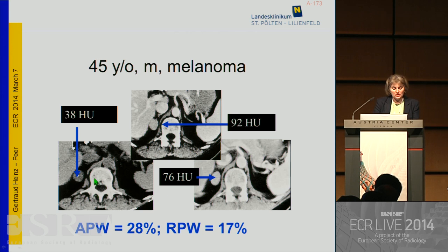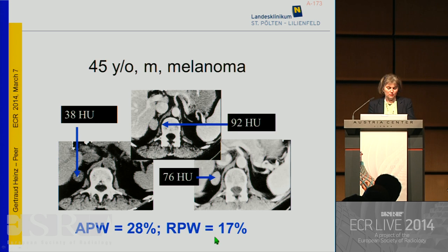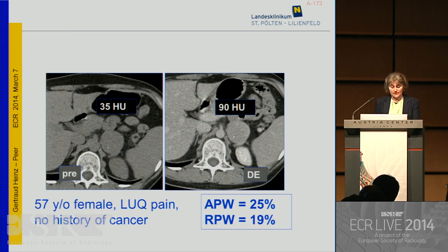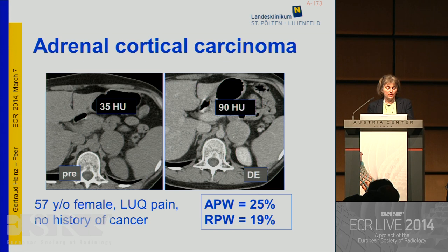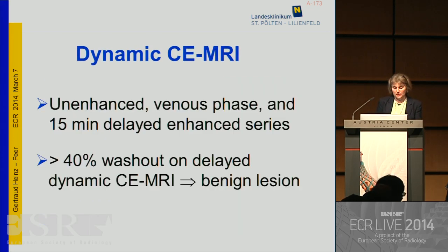Unfortunately, a small right adrenal lesion in a patient with melanoma showing 38 Hounsfield units on unenhanced CT, with an absolute washout of 28% and a relative percentage washout of 17%, is not indicating a benign lesion — this is really indicating the presence of metastasis, and it proved to be one. If there is no underlying malignant disease and washout values indicate a malignant lesion, think about a primary arising from the adrenals — in one case it proved to be an adrenal cortical carcinoma, though these are very rare lesions.